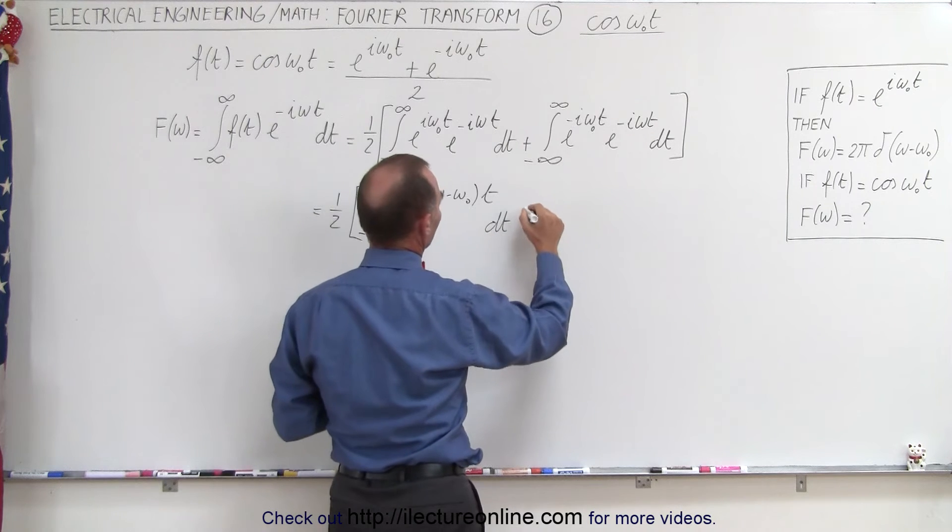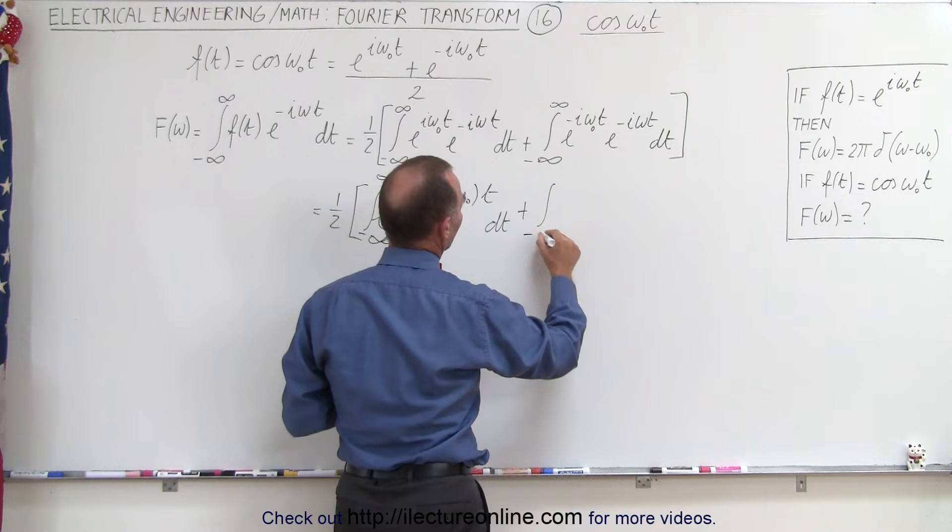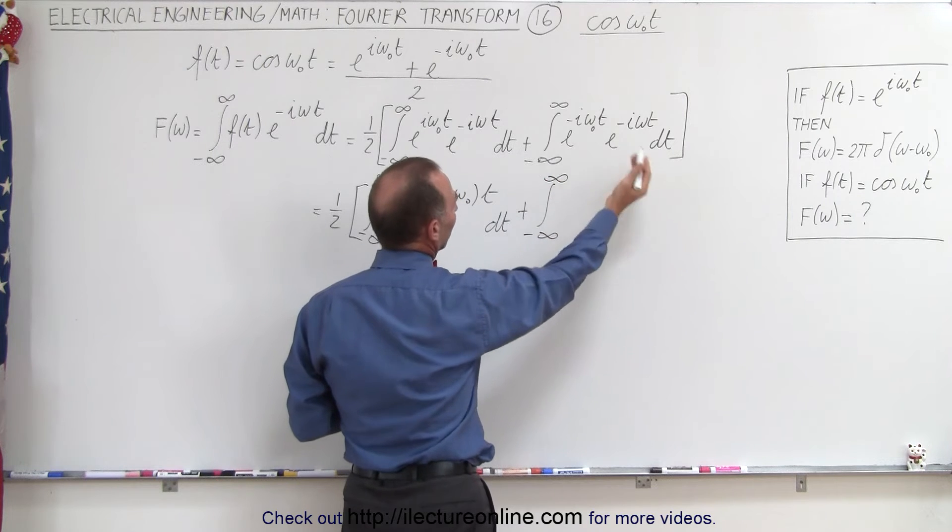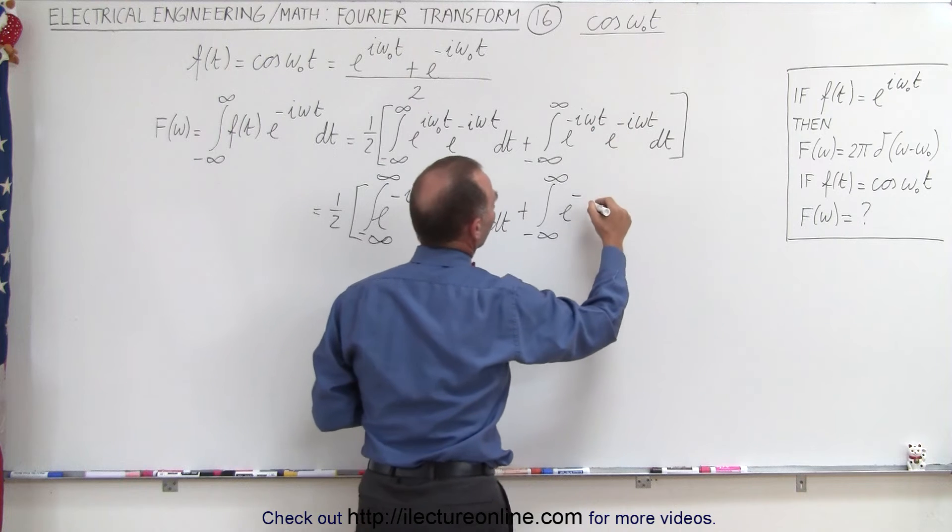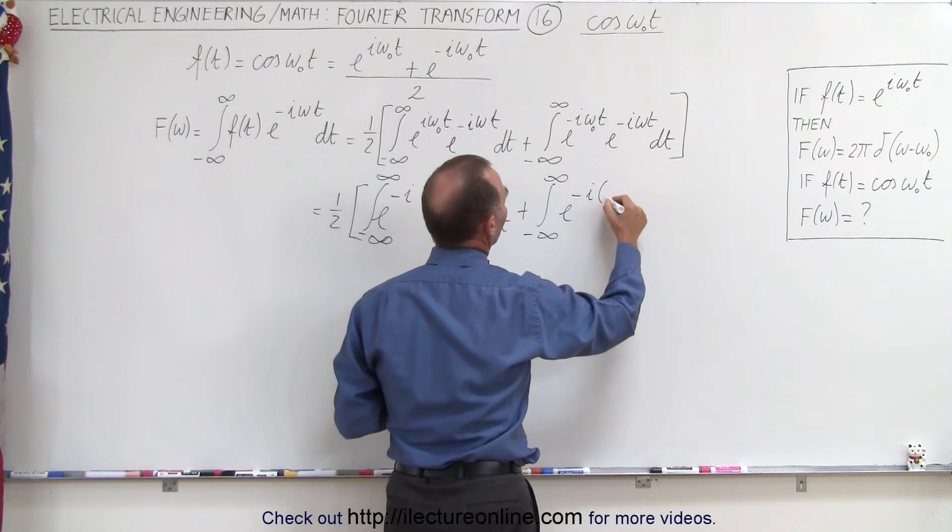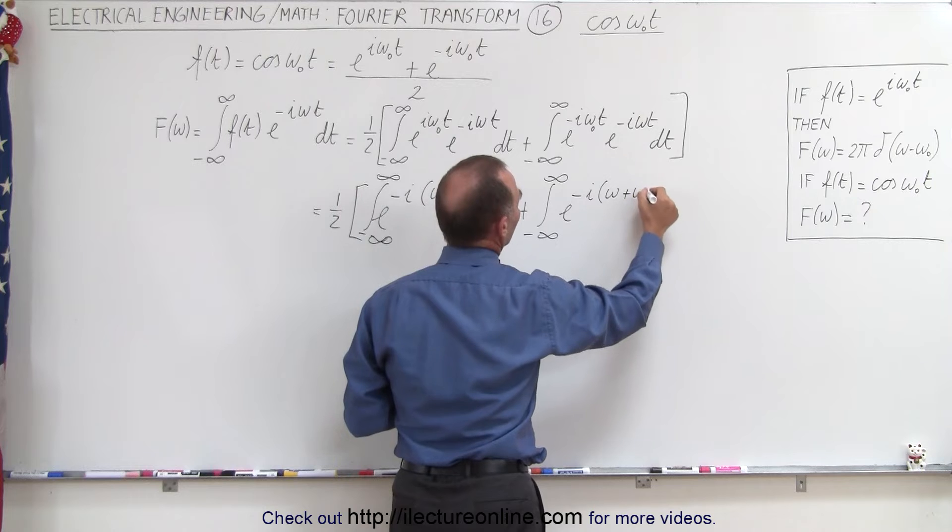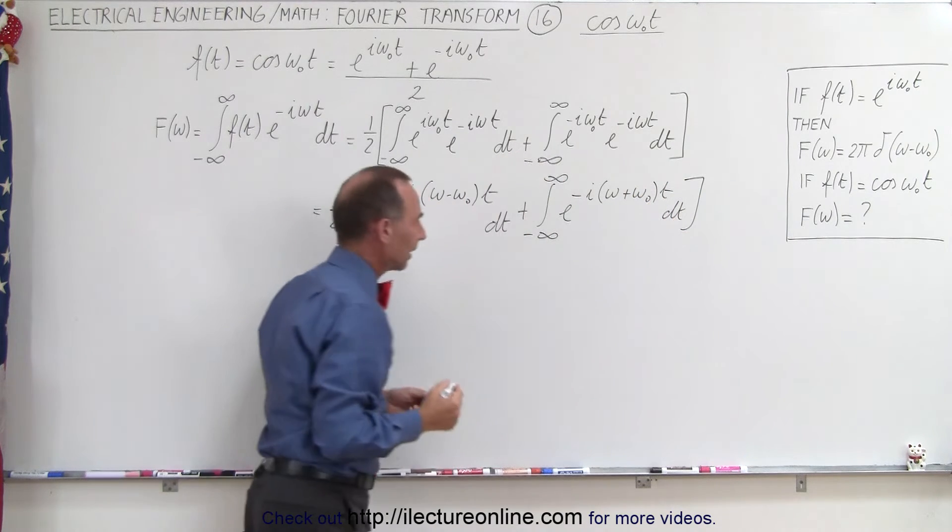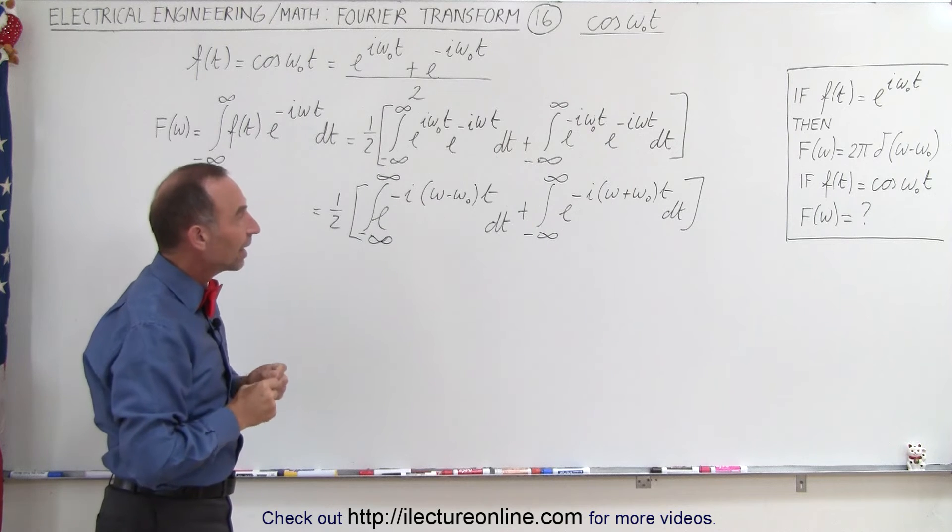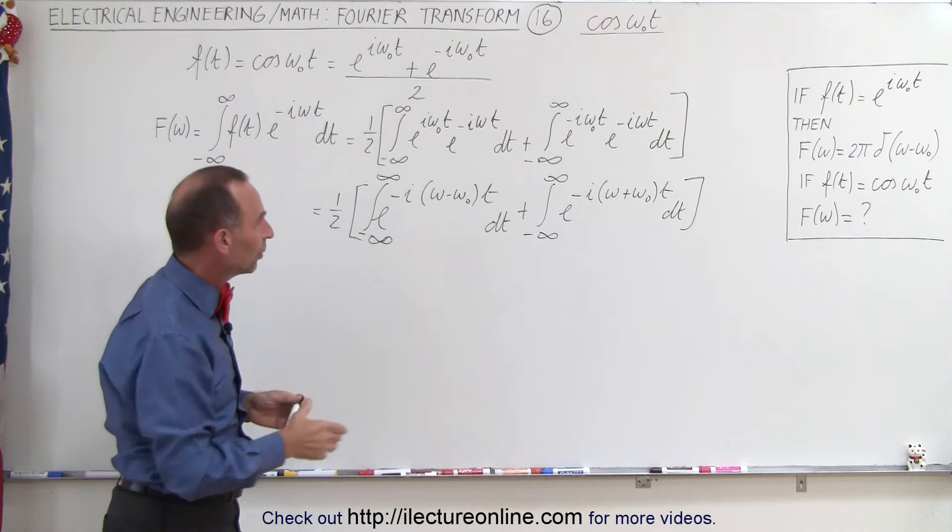Plus the integral from minus infinity to infinity of e^(-i(ω + ω₀)t) dt. We then find the integral and substitute for each one of these in terms of the Fourier transform.